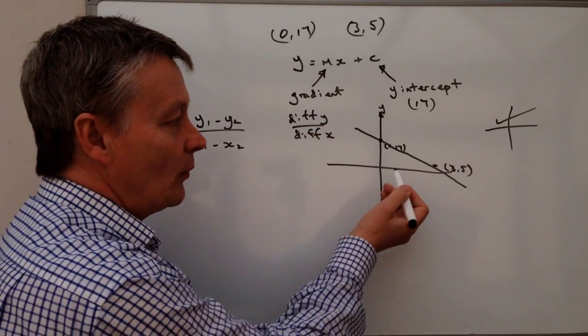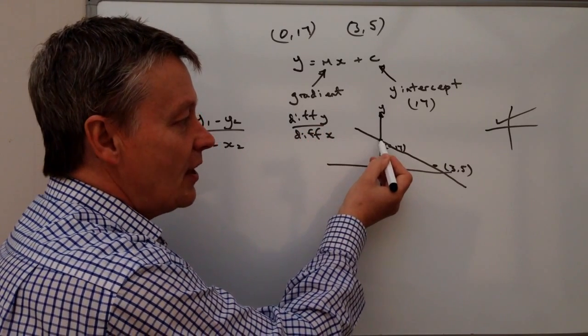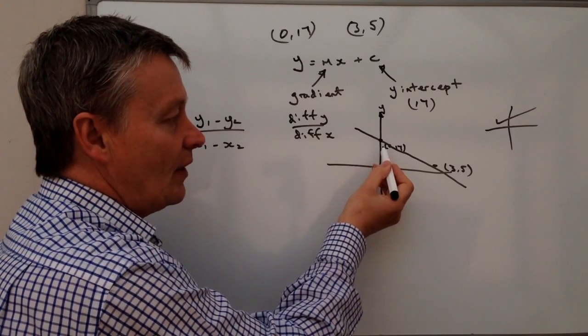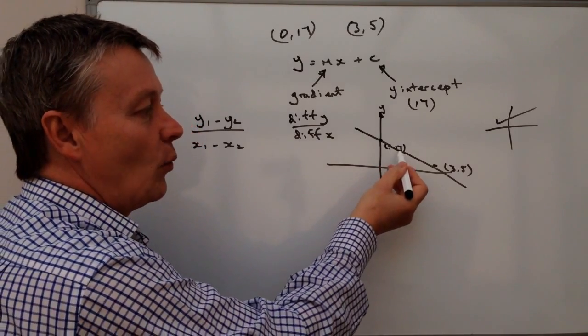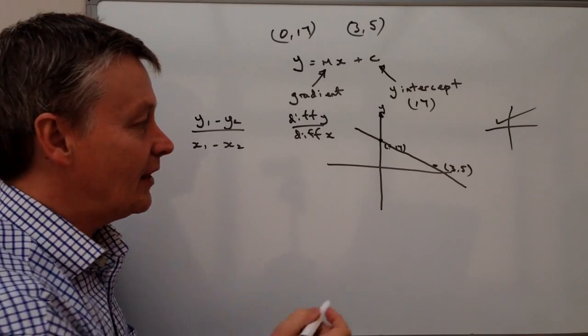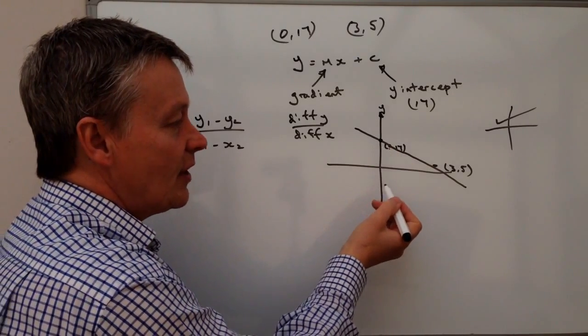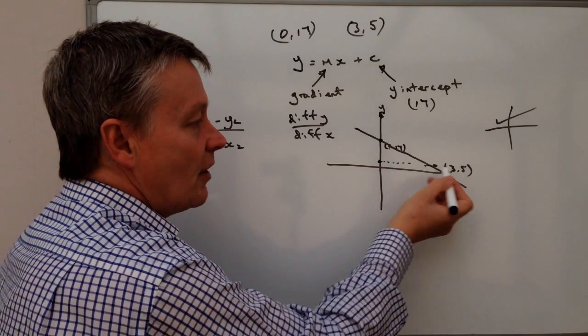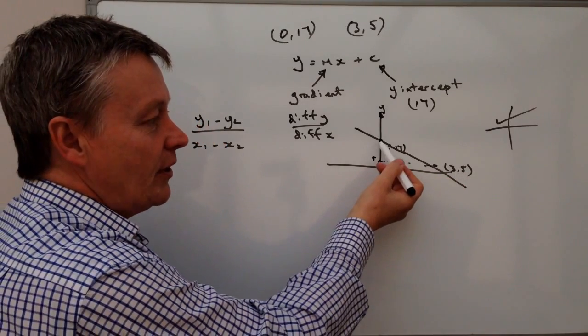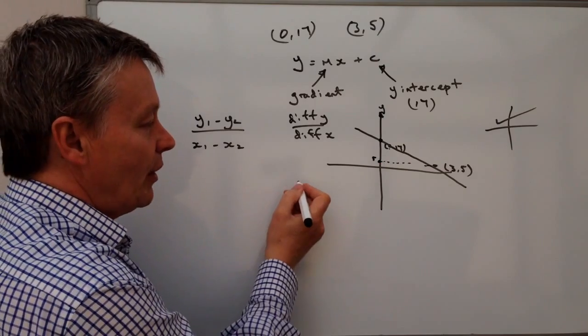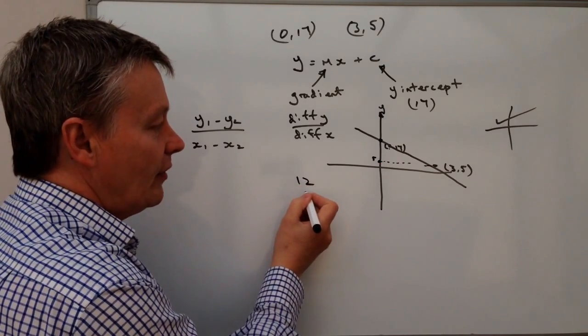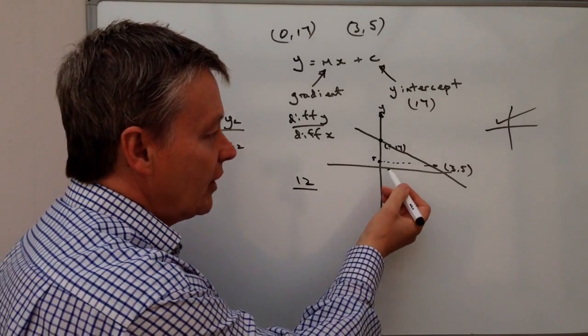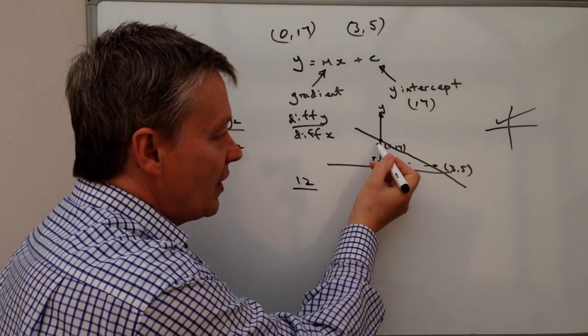So let's have a look at the difference in y. Well, at the moment, the x coordinate is zero, the y coordinate is 17. So it's going to be 17 at that point, and when it gets down to here, it's going to be 5. So the difference between the two is going to be 12. So the difference in y is 12.